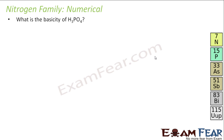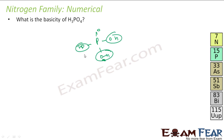The next question: how do you account for the basicity of H3PO4? If you draw the H3PO4 structure, it has three O-H bonds, so it is triprotic — meaning it is tribasic.